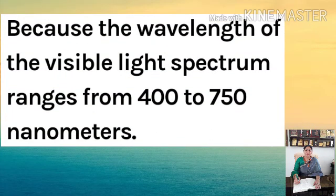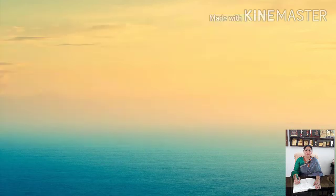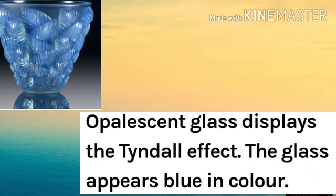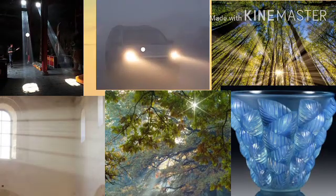The wavelength of the visible light spectrum ranges from 400 to 750 nanometers. We can also see the Tyndall effect in opalescent glass, due to which it appears blue in color. So we can say that because of the Tyndall effect, the world becomes so beautiful and amazing.